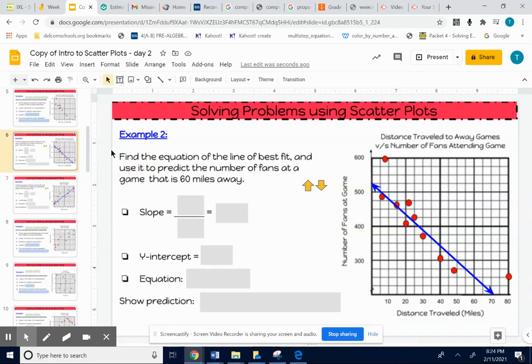Let's do example two. We're looking at the number of fans at a game compared to how far away the game is - the distance that the game is away from your home school and the number of fans.